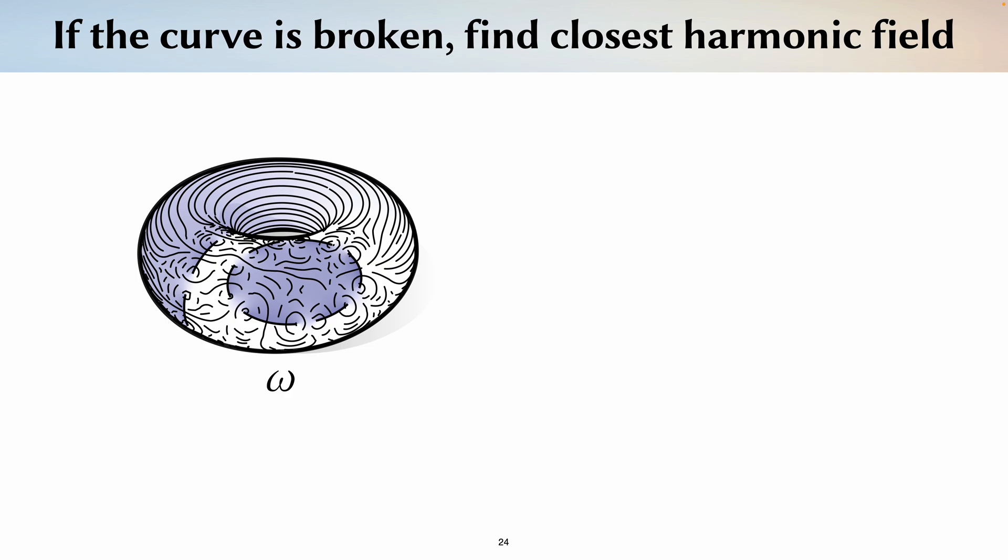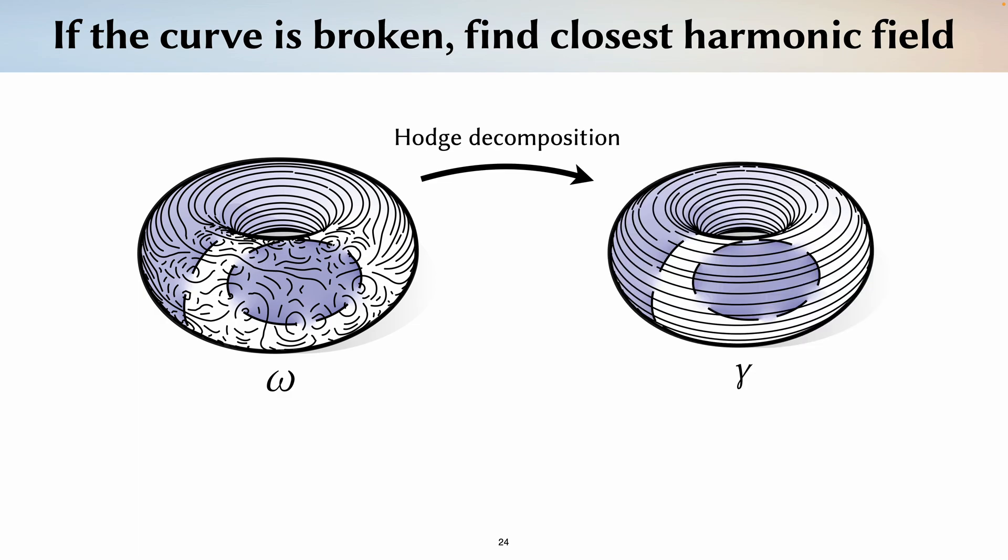In general, for broken curves, the derivative is not harmonic, but will have additional non-harmonic parts. So we apply Hodge decomposition and look for the closest harmonic vector field. Extracting the harmonic part of the gradient vector field in our case turns out to just involve a single linear solve whose size is equal to the number of faces in our mesh.